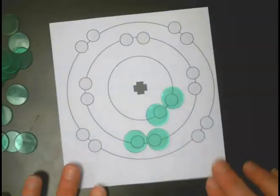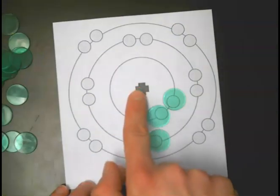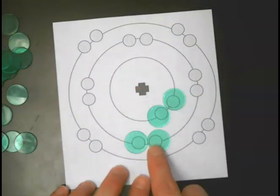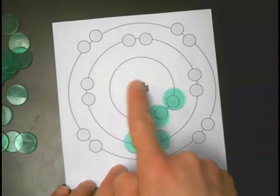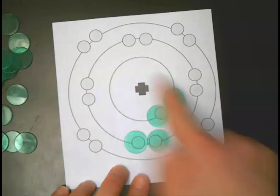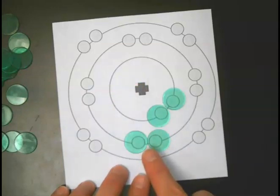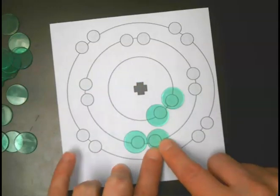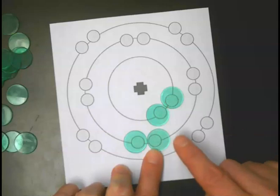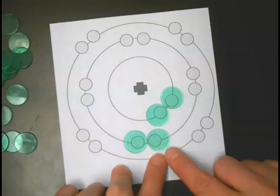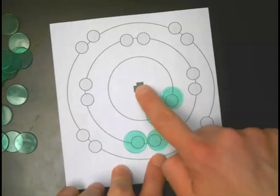Effective nuclear charge is just how much of this charge in the middle these outside electrons feel. It's going to be the number of protons that you have, because that's the charge in the middle. For this particular element, it would be four protons.